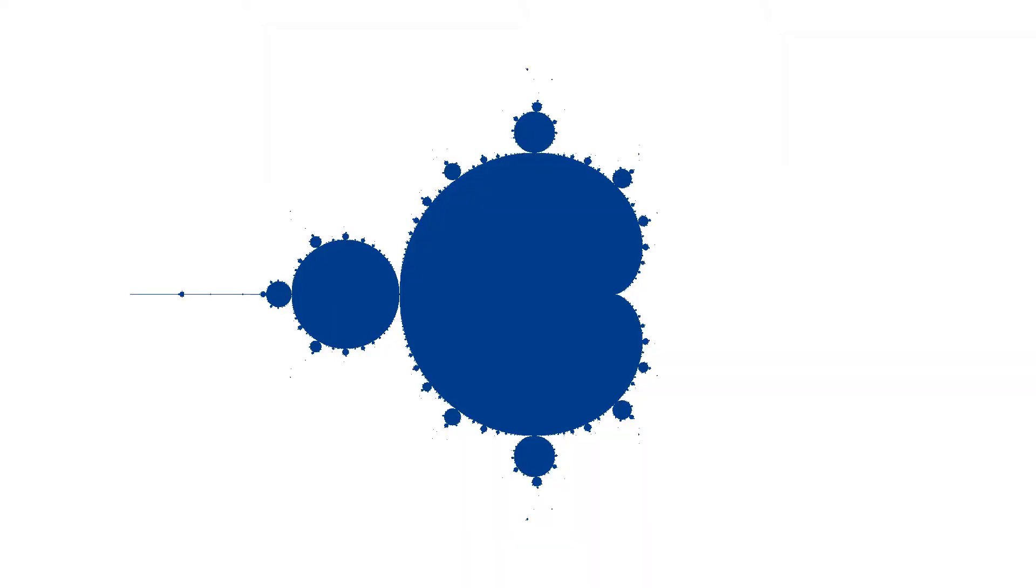When the Mandelbrot set is zoomed in, it can be seen that its small parts are similar to the set itself, but more or less distorted.